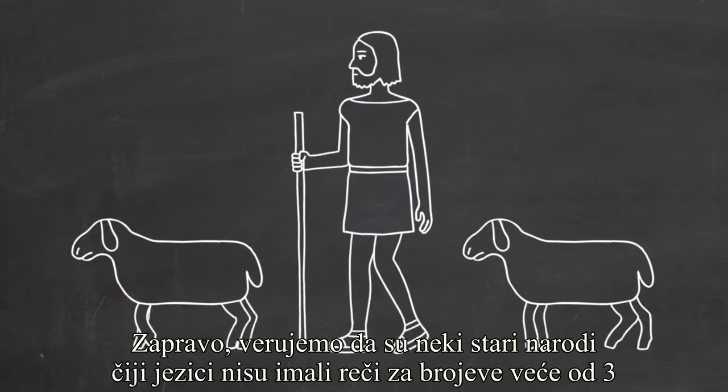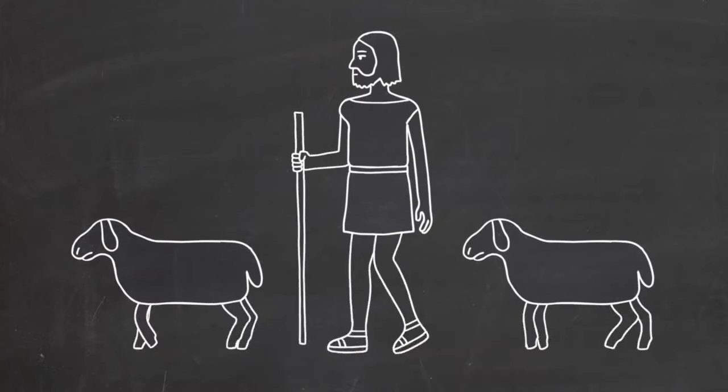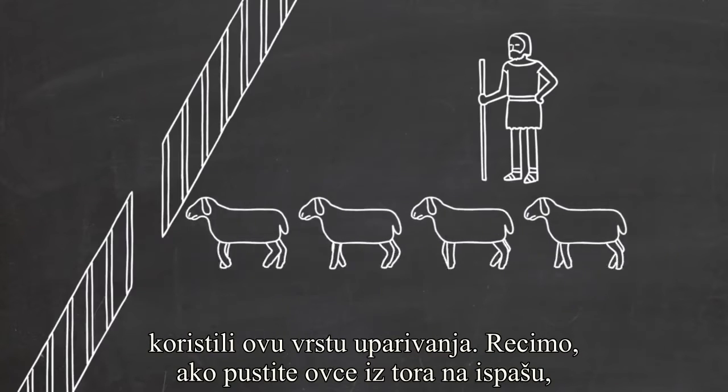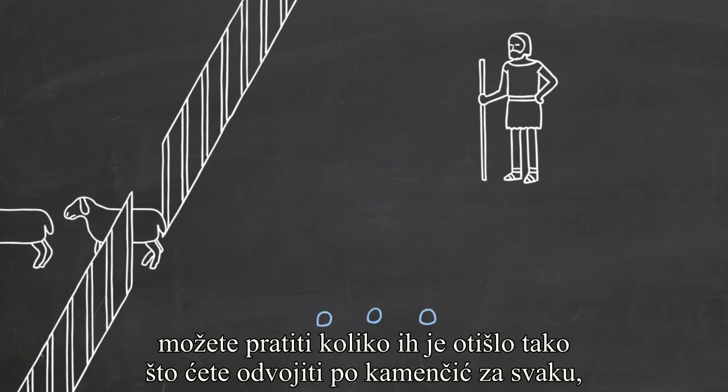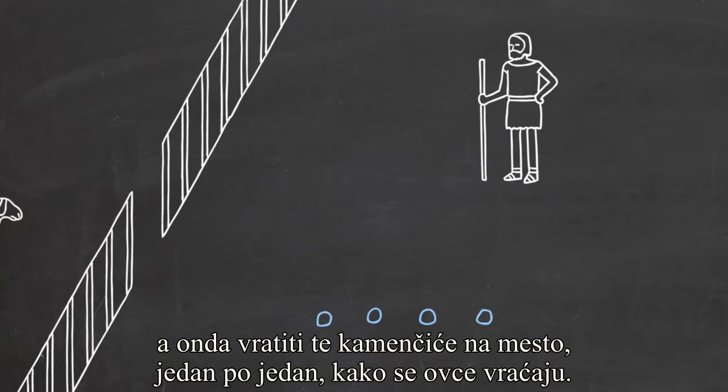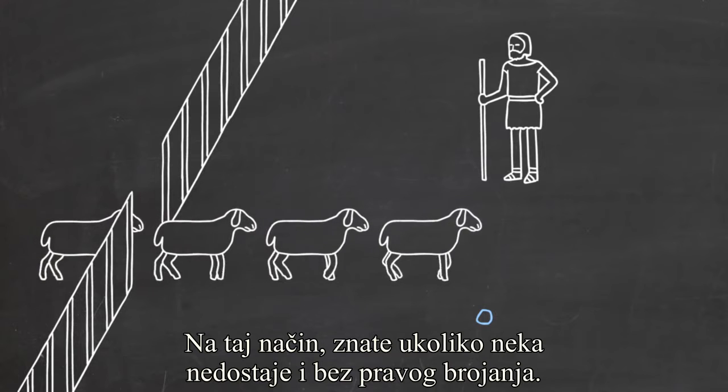In fact, we think that some ancient people, who spoke languages that didn't have words for numbers greater than three, use this sort of matching. For instance, if you let your sheep out of a pen to graze, you can keep track of how many went out by setting aside a stone for each one, and then putting those stones back one by one when the sheep return, so that you know if any are missing without really counting.